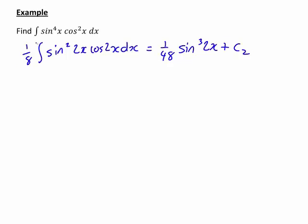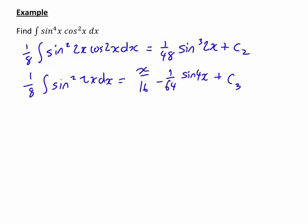Therefore, one eighth times the integral of sin squared 2x cos 2x dx is one forty-eighth sin cubed 2x plus a constant that I've called c2. At this stage it's worth recapping what else we've found. This was the other result we found. The one eighth times the integral of sin squared 2x dx was x on sixteen minus one on sixty-four sin 4x plus another constant which I'll call c3 here.